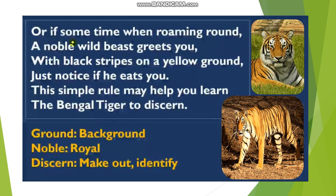Here you can see that the poetic device inversion has been used. Inversion means when the object comes first in the sentence and the subject comes later. Usually we write the subject first and then the object, but inversion is used in poems to make it more rhythmic and rhyming. For example, 'the Bengal tiger to discern' — it should have been 'you learn to discern the Bengal tiger,' but she writes it as 'the Bengal tiger to discern' just to rhyme it with the word 'learn.' Learn, discern. So this poetic device is known as inversion — you change the position of subject and object to make it more attractive or rhythmic.